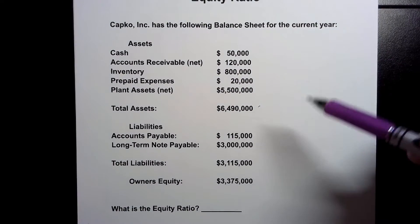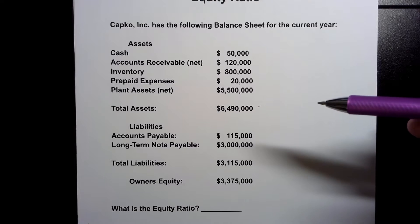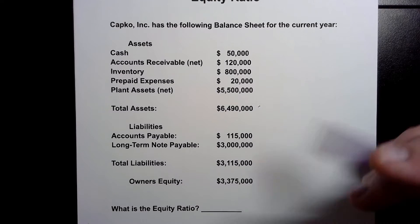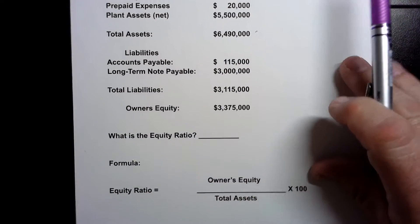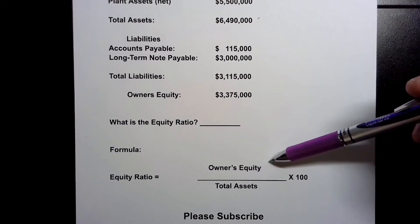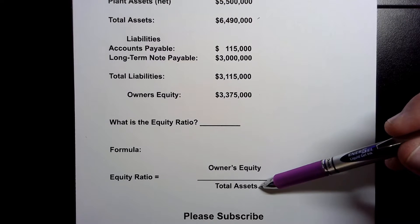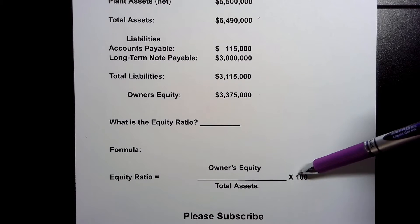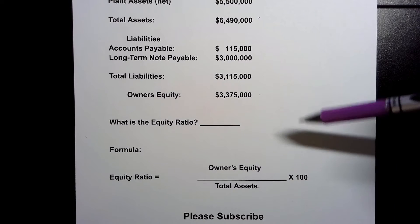Our question today is: what is the equity ratio? To calculate this you're going to need the formula for the equity ratio. Equity ratio is the owner's equity — by the way this is sometimes called shareholders equity or stockholders equity or it might just be called equity, so be aware that there's more than one name for this — divided by the total assets. And once we do that division we multiply by 100 because we want to turn that decimal into a percentage.